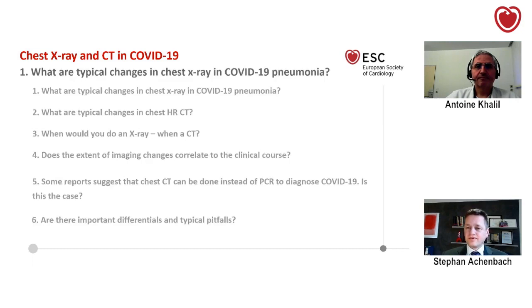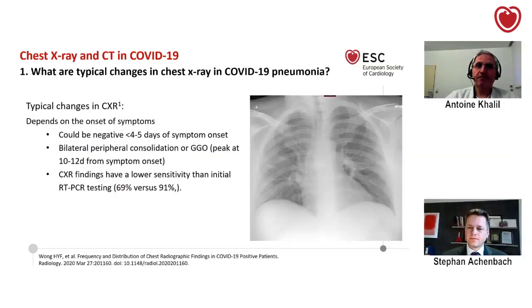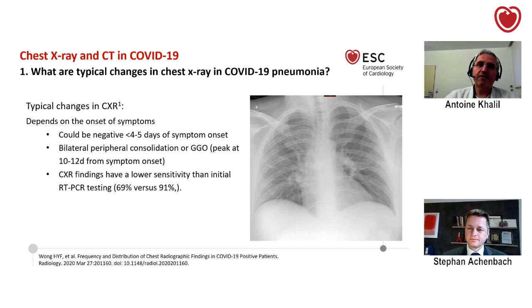What are the typical changes that one could expect in chest X-ray in COVID-19 pneumonia? The typical changes in chest X-ray depend on the onset of symptoms. Patients can come to the physician with two or three days of symptoms, and in this case chest X-ray could be normal. For CT scan, scans performed within two or three days show 56% normal results. It could also be negative within four or five days after symptom onset.